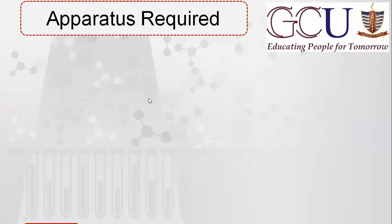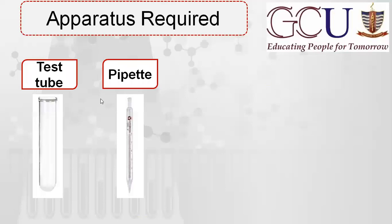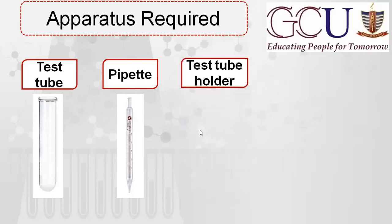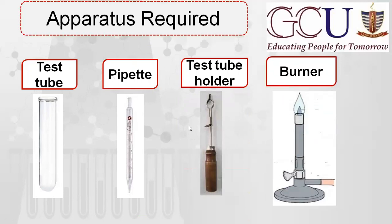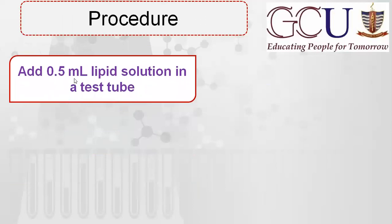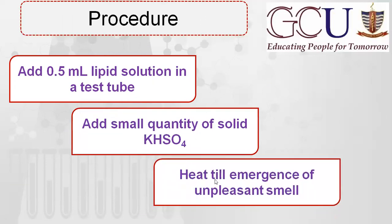The apparatus required includes a test tube (to place the fat in), a test tube holder, and a burner for heating. The procedure is: take 0.5 ml of lipid solution in a test tube, add KHSO₄, then heat until an unpleasant smell is produced.